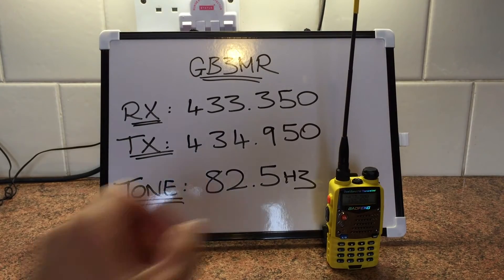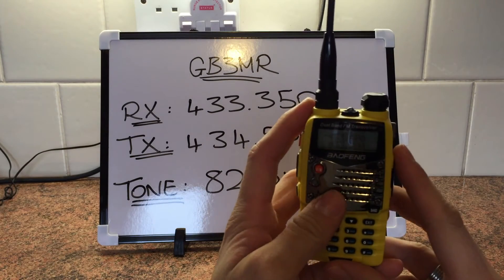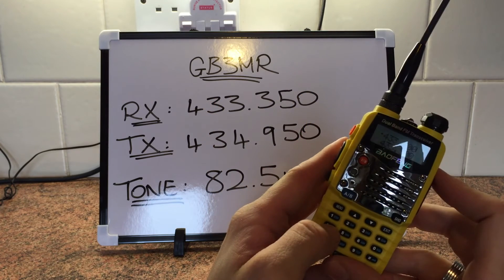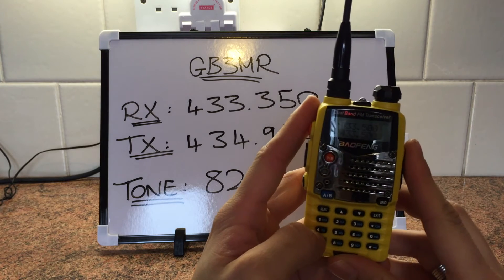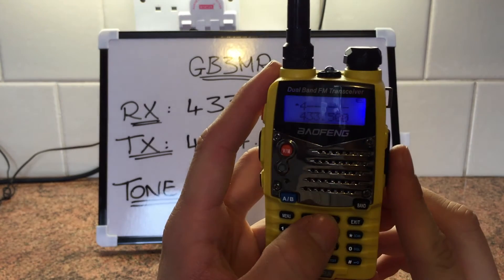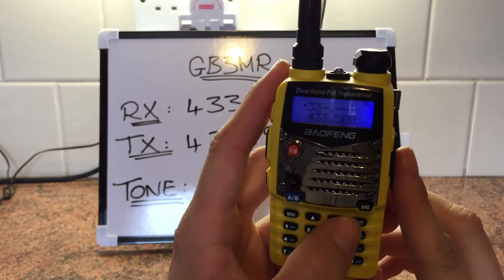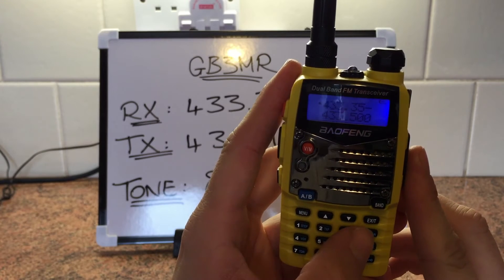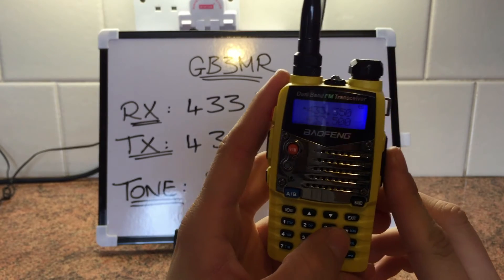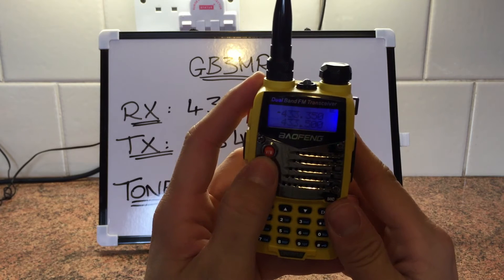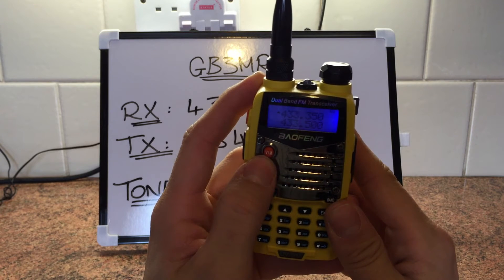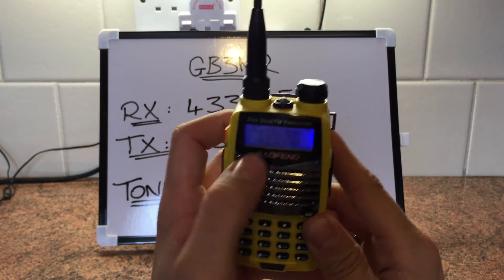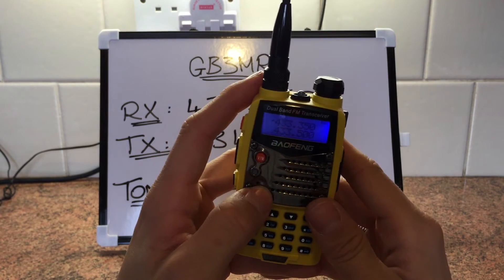So I'll show you how to do it now. You take the radio and you type in the repeater output frequency, which in this case is 433.350. Make sure you're in VFO mode — you press that button there to toggle between memory mode and VFO mode — so 433.350 has been typed into the radio.